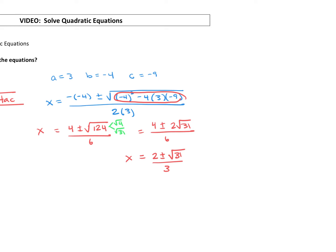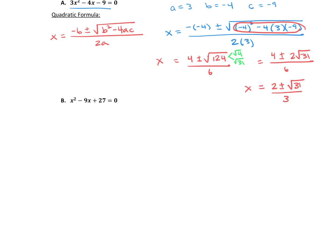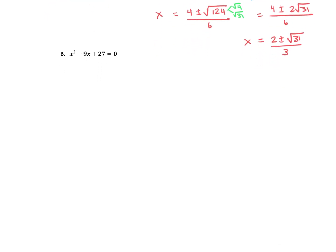So our answer is x equals 2 plus or minus the square root of 31 over 3. That's actually two answers: one is 2 plus square root of 31 over 3, and the other is 2 minus the square root of 31 over 3. If we wanted a decimal approximation we could use a calculator, but because 31 is not a perfect square it would be a rounded answer — so this is an exact answer, which is why we leave it in that form.